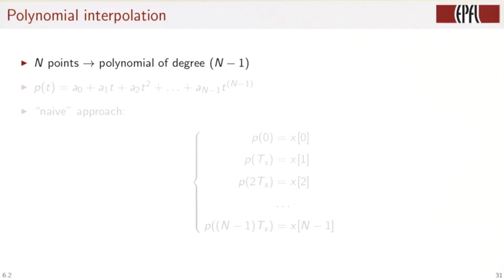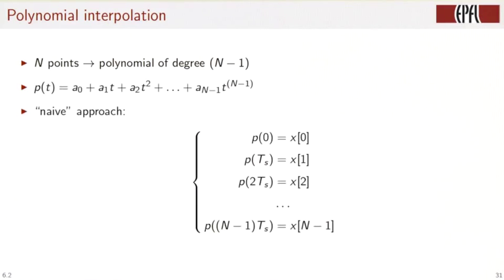So we have p of t, which is an n-1 degree polynomial, and we simply fit the polynomial to the sample. So p of 0 has to be equal to x0, p of ts equals x1, up to p of n-1 times ts.